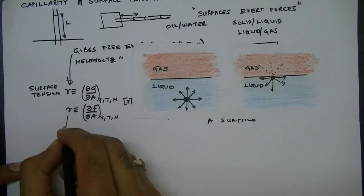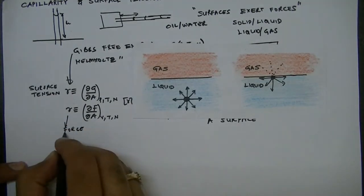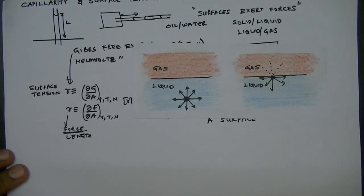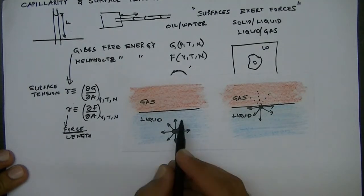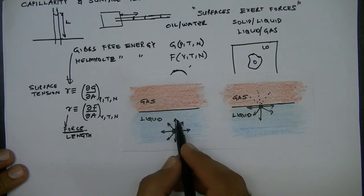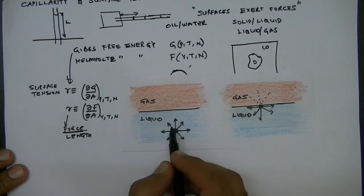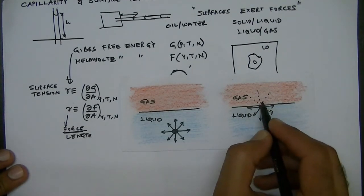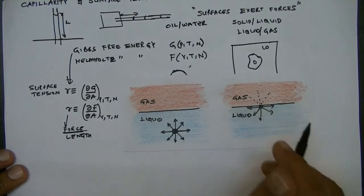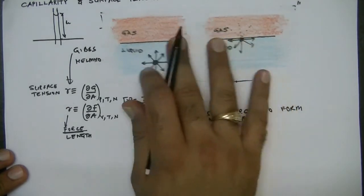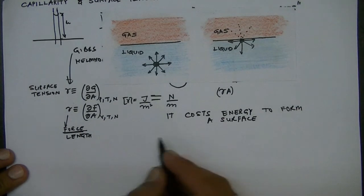An alternative interpretation of surface tension is that it is a force per unit length. If we consider a molecule in the bulk, it is attracted by other molecules equally in all directions, so there is zero net force. But when a molecule is on the surface, there are no molecules in the gas phase pulling it, so there is a net inward force, which leads to surface tension.